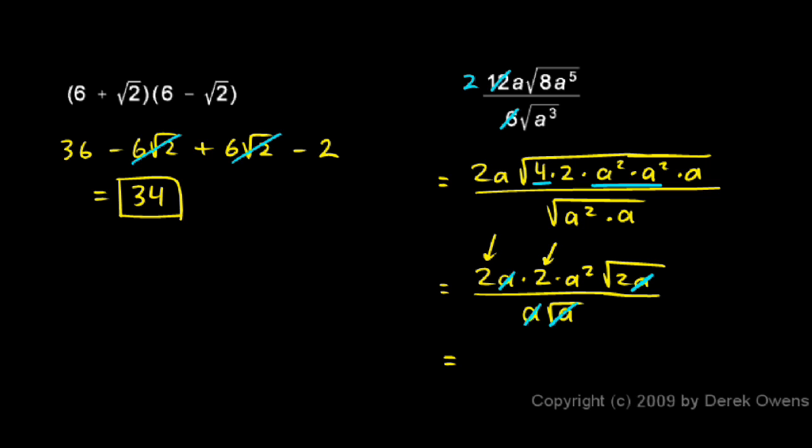I'm left with 2 times 2, which is 4, and an a² right there, 4a², and a square root of 2. So 4a² times the square root of 2.